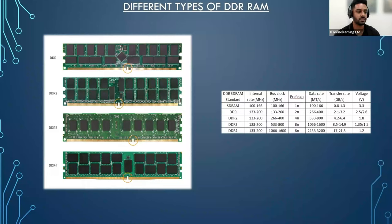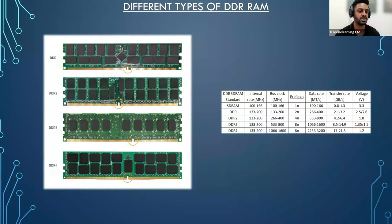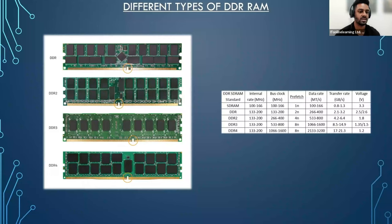Moving on to DDR3 RAM, the release occurred in 2007. The memory module became much more power efficient, operating at 1.35 and 1.5 volts, with speed also increasing up to 1066 megahertz. Capacity also increased, reaching up to eight gigabytes per module.